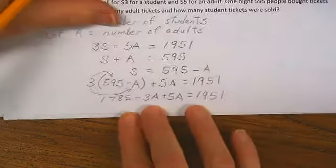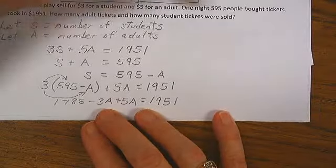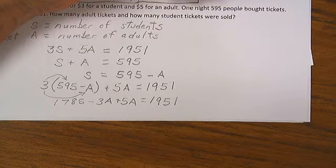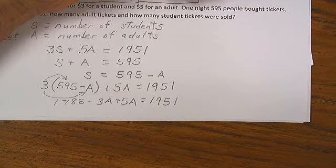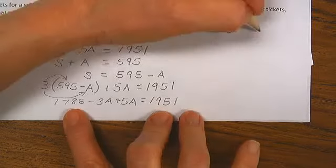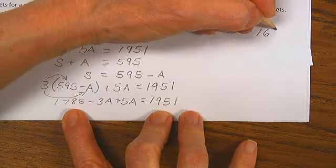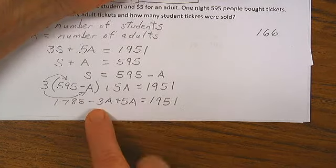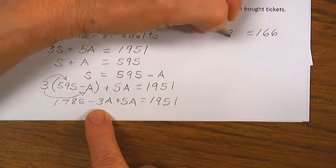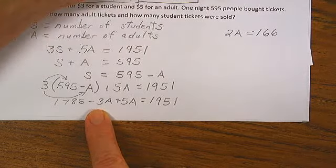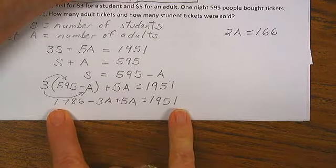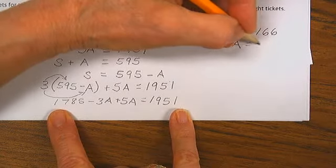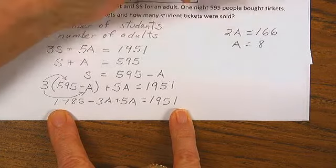Am I done? No, but I'm getting close. Now I subtract 1785 from each side. And that gives me 166. 5A minus 3A is 2A. By now I think you can follow what I have done here. I combined steps, but I don't think it was so challenging you can't understand. So A equals 83.